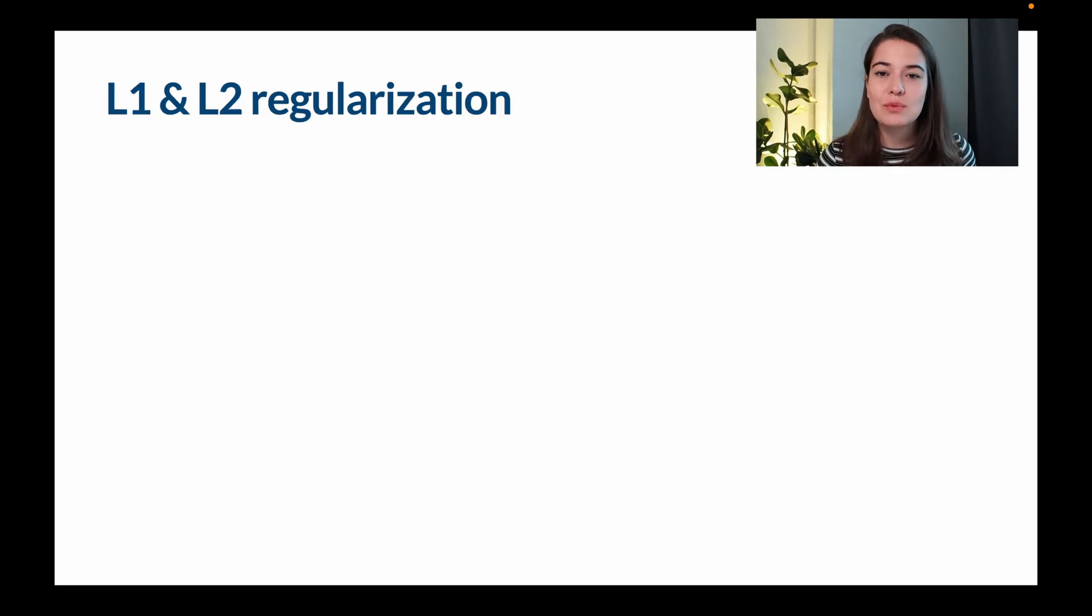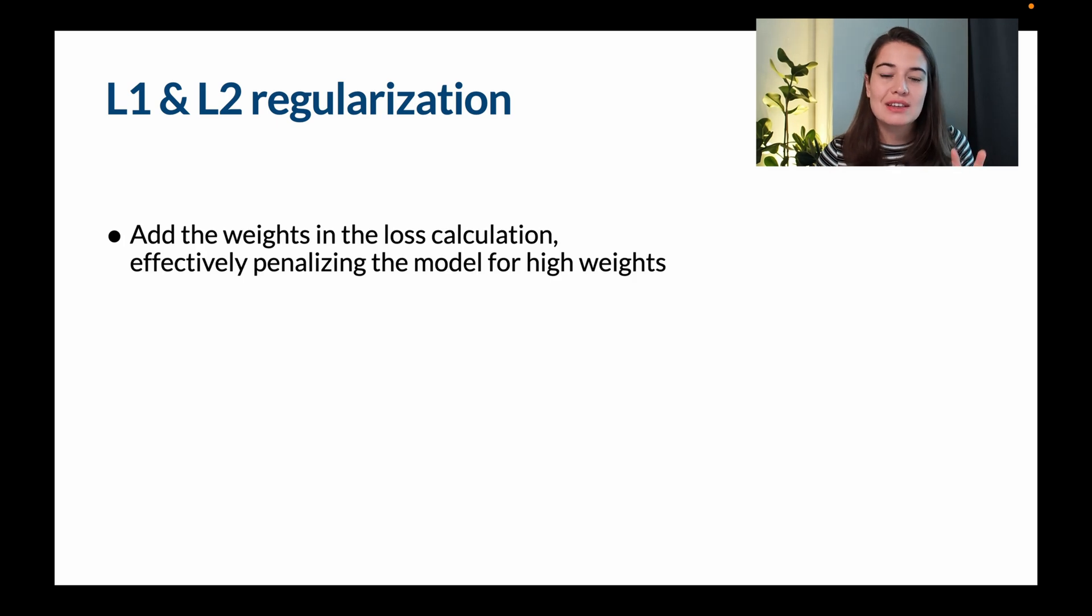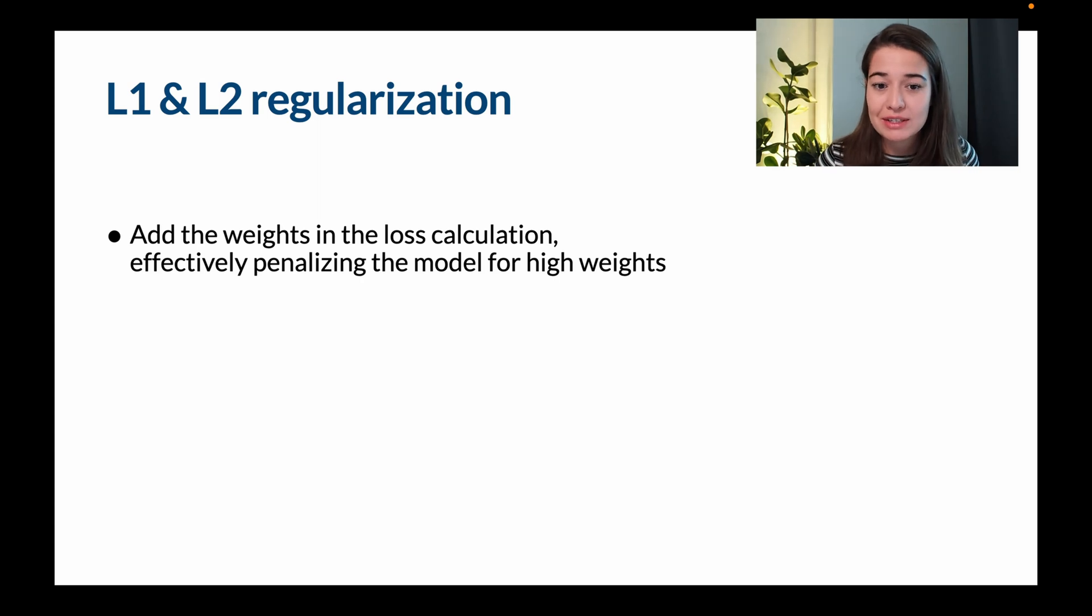The idea behind L1 and L2 regularization is adding the weights into the loss calculation or the cost function to punish the network for having higher weights. They just have slightly different approaches of how they do this. So when you're using L1 regularization, you can also see it mentioned as L1 norm or lasso all over the internet or in the sources that you're looking into.